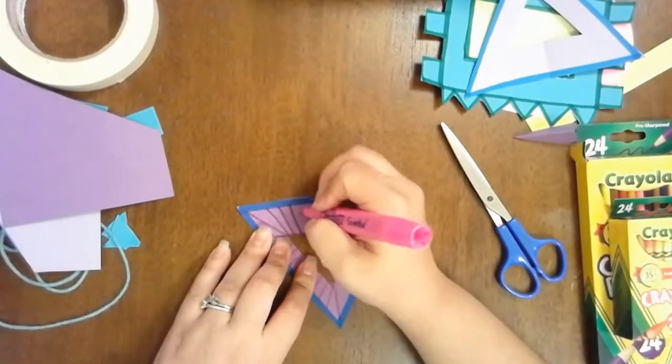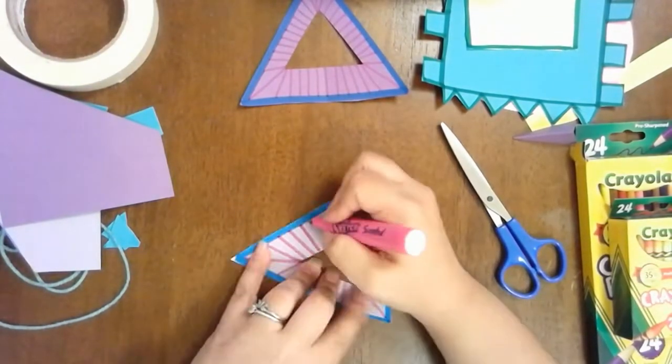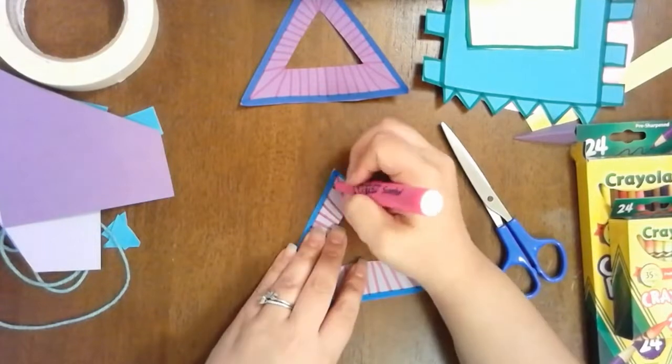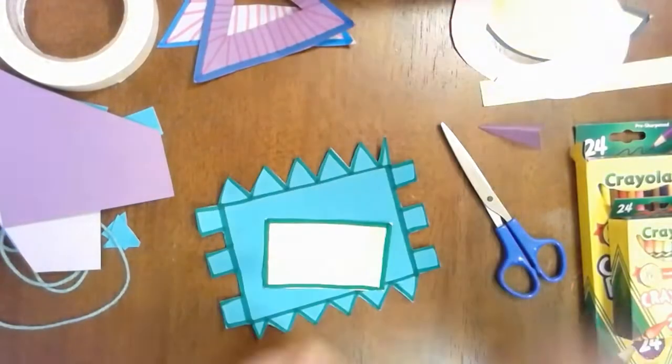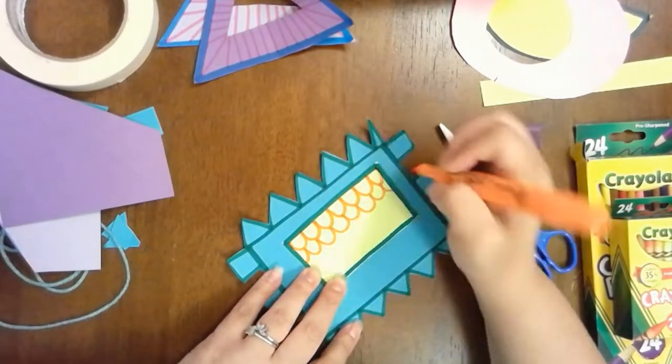After you're done cutting out all of your shapes, you're then going to add some patterns. You can decide how you want to add your patterns. You can use any kind of line or shape. And you can use markers, colored pencils, or crayons. Whatever you have.